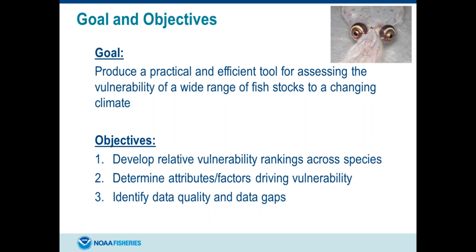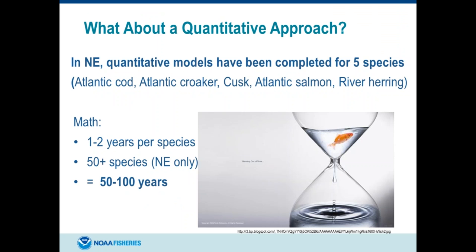Looking at the specific objectives: develop a relative vulnerability between species, figure out what are the life history traits or attributes behind that vulnerability, and identify where there are data gaps. This methodology is a triage that does more of a qualitative analysis across multiple species. Why not the quantitative approach? In the Northeast, John Hare has been involved in a lot of these, but there have been five species with a good quantitative mechanistic analysis done — it ends up taking multiple people multiple years per species. To understand climate change impacts on 50 species would be over 100 years. We need this fast triage method to get a first cut.